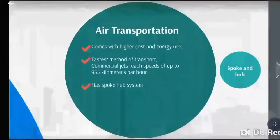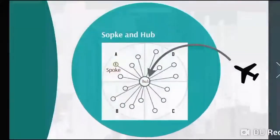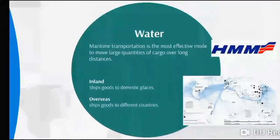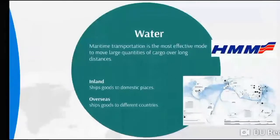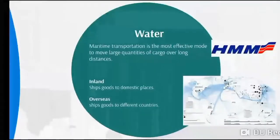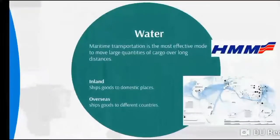Water transportation. Maritime transportation is the most effective way to move large quantities of cargo over long distances. Inland ships move goods to domestic places via inland waterways and between inland ports of a country. Overseas transport is the physical process of transporting commodities, merchandise, goods, and cargo. The term shipping originally referred to transport by sea from one country to another.